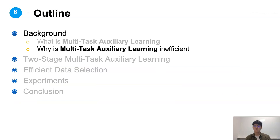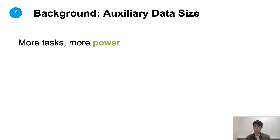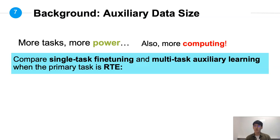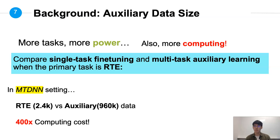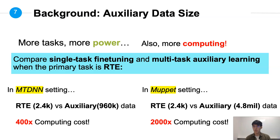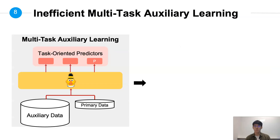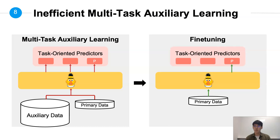Let's talk about why Multitask Auxiliary Learning is inefficient. Using more auxiliary data seems promising to improve performance. However, the increasing computing costs cannot be ignored. When we compare the single task scenario and Multitask Auxiliary Learning scenario using RTE as the primary task, the training cost is 400 times larger in MTDN settings and 2000 times larger in MUPET settings. The computing cost is obviously too high and Multitask Learning on such a large scale is impractical.